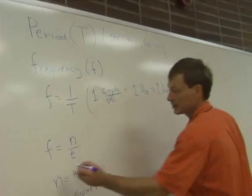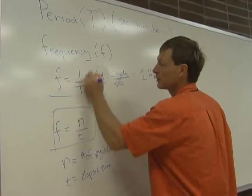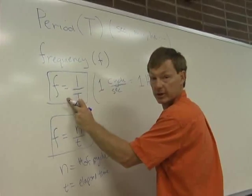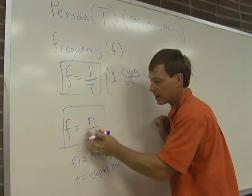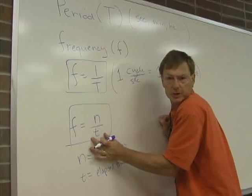So n equals number of cycles, t equals elapsed time. Let's do a couple of examples. We've got these two equations. We've got frequency is the inverse of the period, and that's also the number of cycles divided by the time it took to accomplish all those cycles.